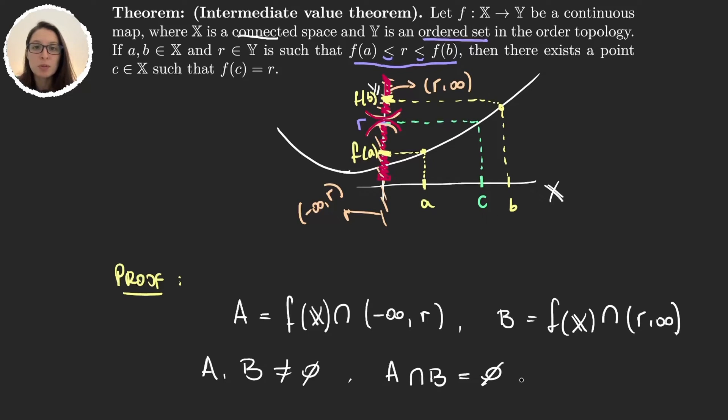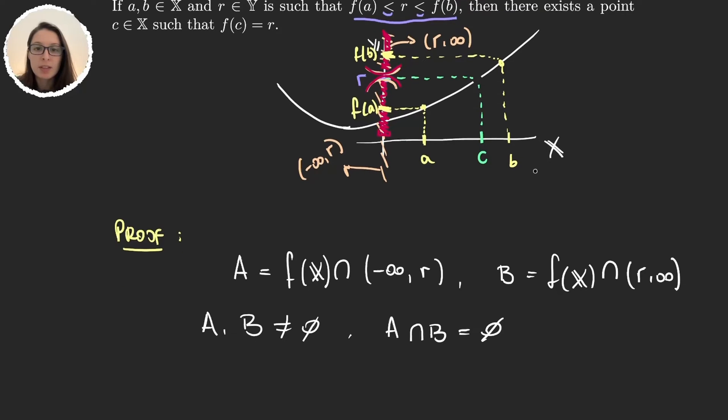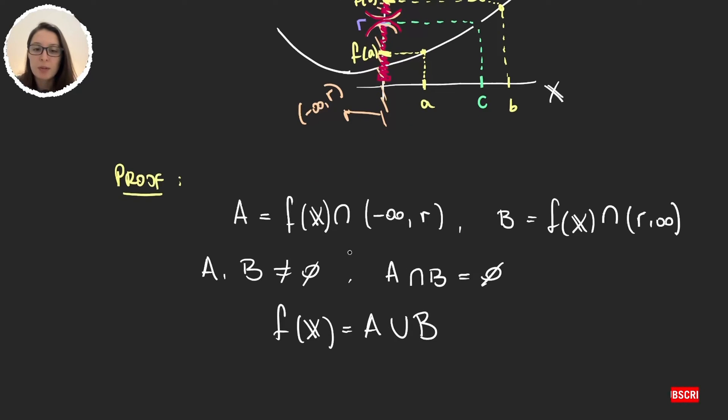And so let's suppose that this number c doesn't exist, so there is no c such that f of c is equal to r, meaning that here we will have some hole in our function. So what happens is that we can write f of x as the union of A and B.